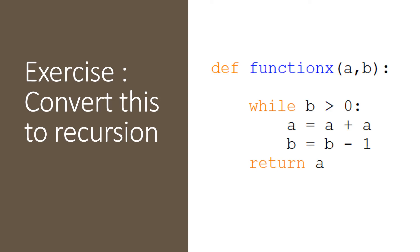So here's a function — it doesn't do anything very useful, but it uses a while loop. Can you convert that function so that instead of using a while loop it uses recursion, and returns the value 'a' when it gets to the end of the recursion? Also write a line in the main program which calls the function and prints out the result. We'll do more about this in the next lesson where we'll convert recursion into iteration. Thank you.